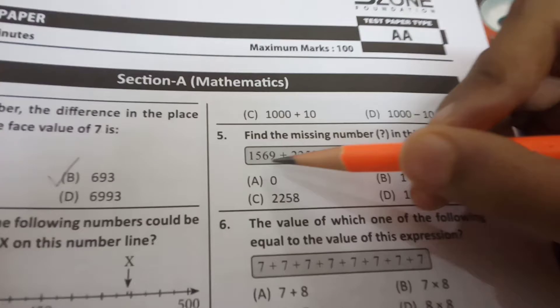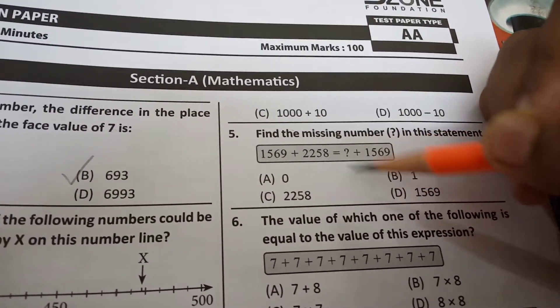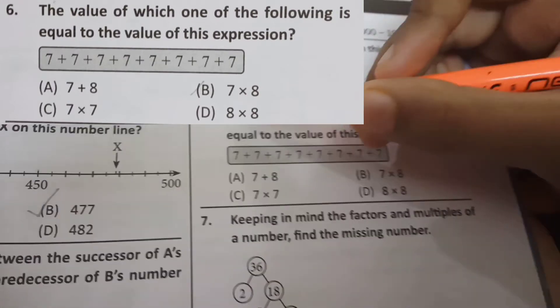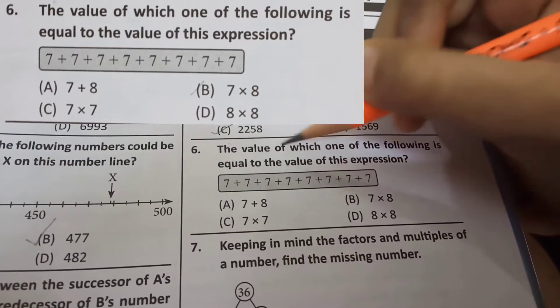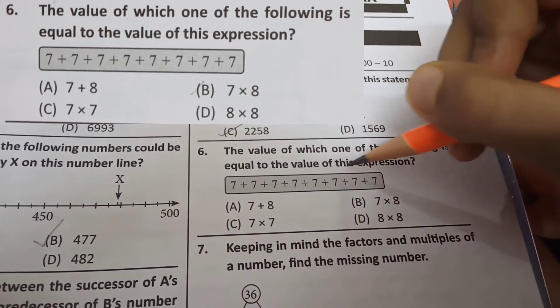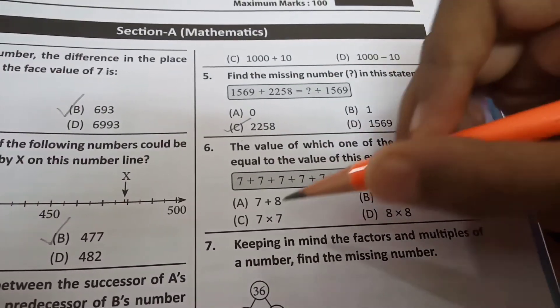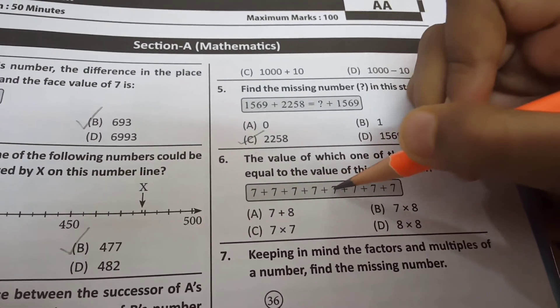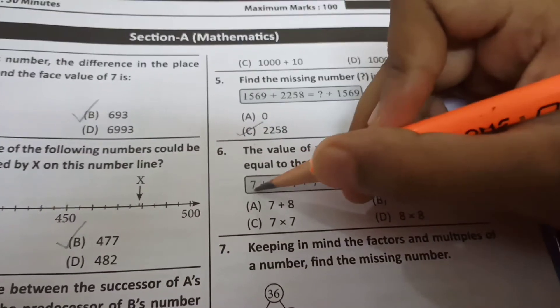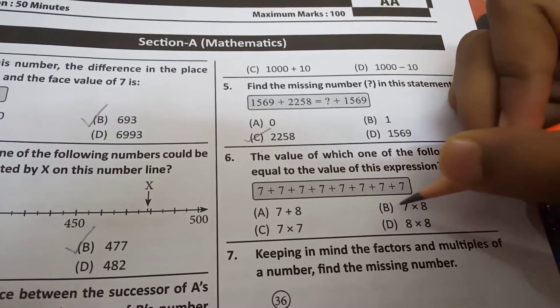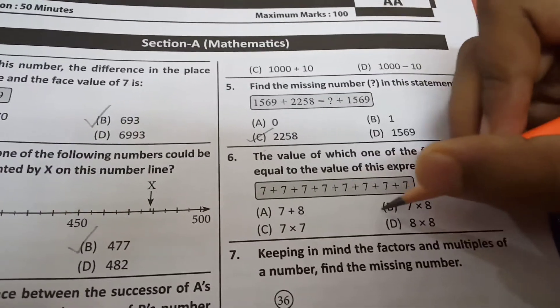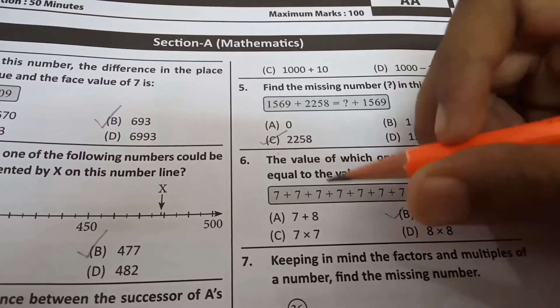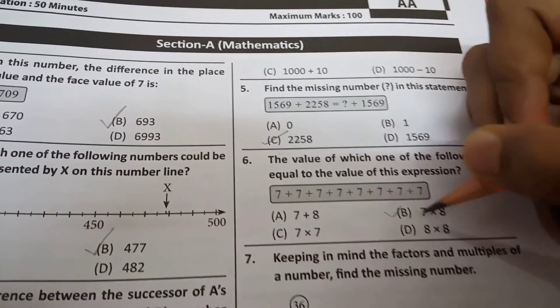So look, this plus this equals this plus this. It is so easy. Next question 6. Here it is showing that the value of which one of this expression. So it is showing which one of these is equal to this. So here 7 is added how many times? 1, 2, 3, 4, 5, 6, 7, 8. So 7 is multiplied 8. So it will be 7 multiplied by 8. Because 7 multiplied by 8 means 7 will be added 8 times. Here also 7 is added 8 times. So answer is B.